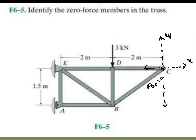In the x direction, since FBC is already zero, FDC will also become zero. So you can eliminate those members. Then at point D, the horizontal force FCD has already become zero, so AD will also become zero. The 3 kN force is downward, so the force along BD will become compressive.